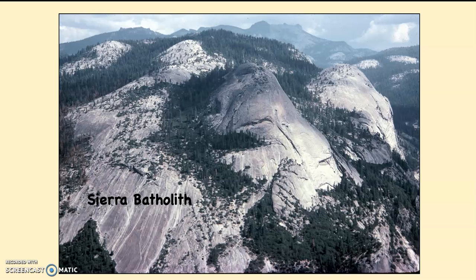The Sierra Nevada in California is almost 500 miles long, and most of it is an uplifted batholith. Which means that rock you're looking at — which is granite — was at one point under the ground in a liquid form. It cooled over a very long period of time, and then was uplifted along that normal fault on the eastern slopes of the Sierra Nevada. That exposed the Sierra Nevada batholith.